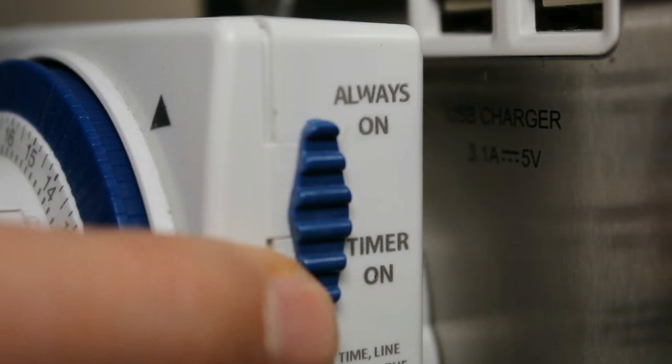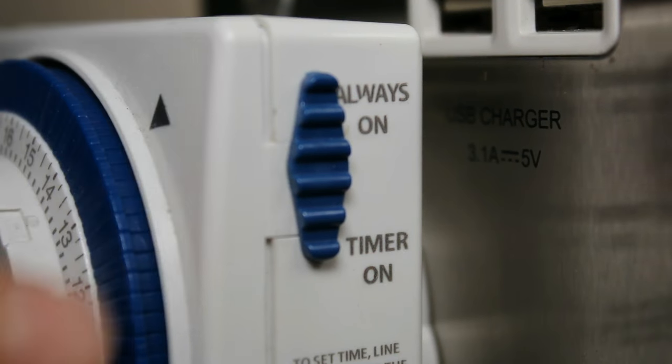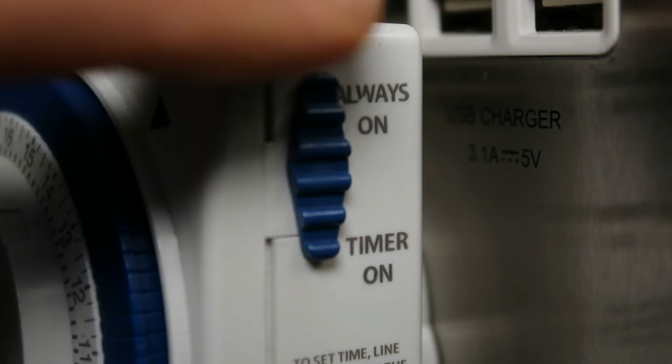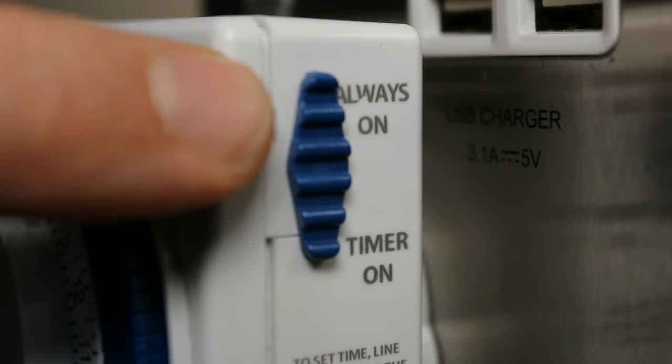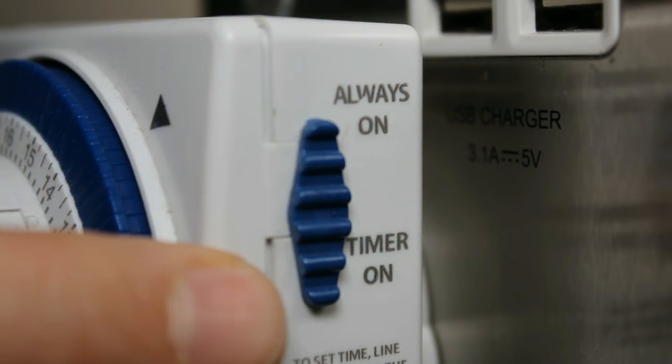When the switch is down the timer is on. When the switch is up the appliance is always on. So the timer will still turn but the appliance will be on. If you want to put back the time so it only comes on when you've told it to, you pop that back down to timer.